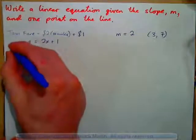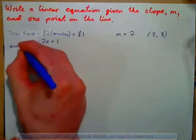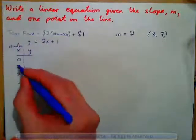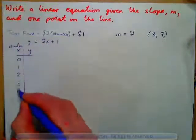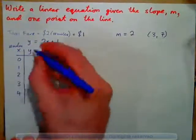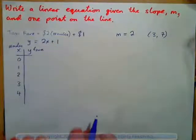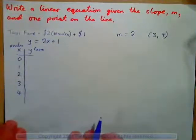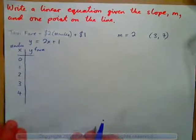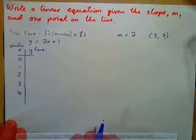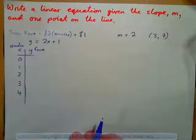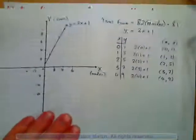X is number of miles. If the number of miles is 0, 1, 2, 3, 4 — what would the taxi fare be? Y is the fare, so fill out the table. Press pause at the bottom left of your screen and fill out the table. What you should get, of course, is this table here.